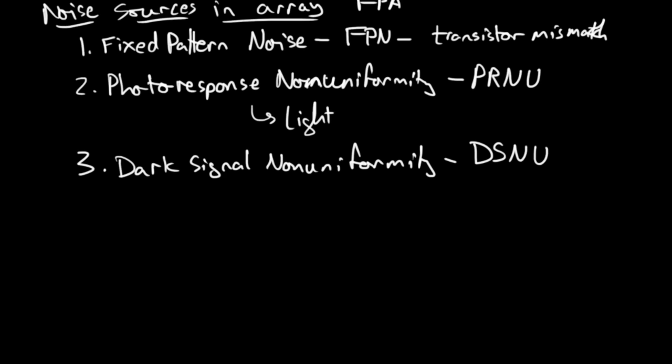These are the noise sources that only apply to arrays of pixels — none of these three apply to a single pixel. If you're talking about a single pixel, refer to the previous video. They describe differences between pixels and just don't have any meaning for a single pixel. Also, in practice, not everybody has consistent terminology for these three things and sometimes they mix them up — keep that in mind and be flexible with the definitions, but try to keep these three firmly in mind.